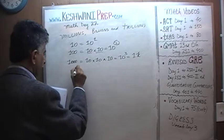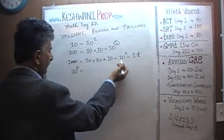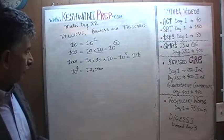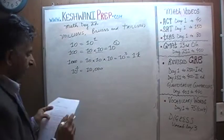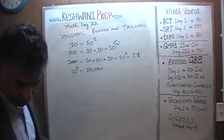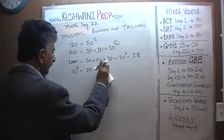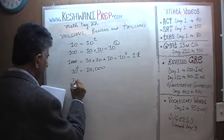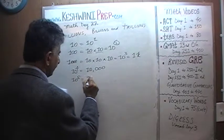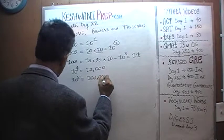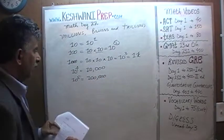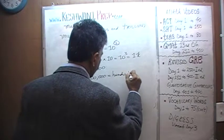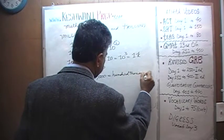10 raised to 4 — if 10 raised to 3 is a thousand, then 10 raised to 4 is 10 times that amount, which is going to be 10,000. And 10 raised to 5 is 10 times that, which is 100,000 — one hundred thousand.